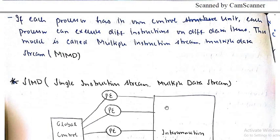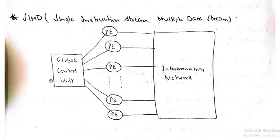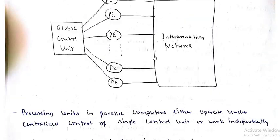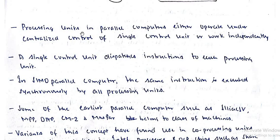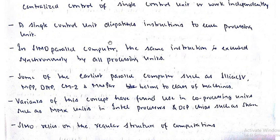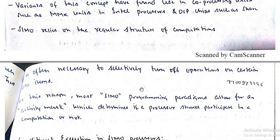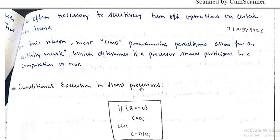In SIMD, there is one global control unit and different processes are executing. Processing units operate under centralized control — a single centralized controller dispatches instructions to each unit. In a SIMD parallel computer, all processing units execute the same instruction synchronously.